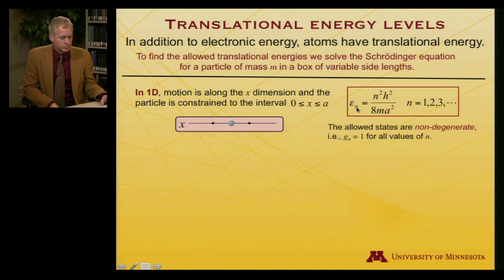And if you solve the relevant Schrödinger equation, you will discover that the allowed energy levels, so indexed by a quantum number, and the number goes one, two, three, dot, dot, dot, the degeneracy of every level is one, so every state is unique in its energy. It goes as n squared. Here's Planck's constant again, h squared, divided by eight times the mass times the square of the length of the box.